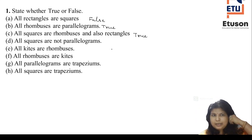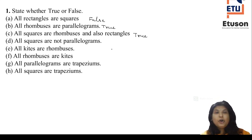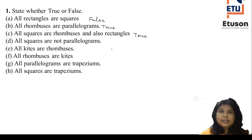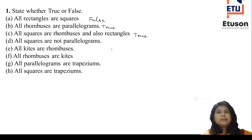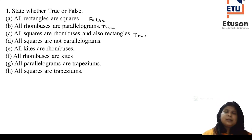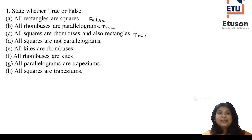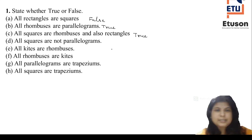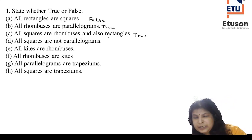Bit D: All squares are not parallelograms. Just now in the previous statement we found that all squares are rectangles. And all rectangles are parallelograms. So all squares are parallelograms. The statement here says all squares are not parallelograms — so this statement is absolutely wrong. It is false.